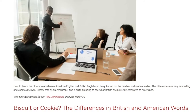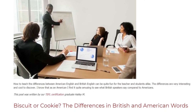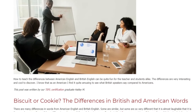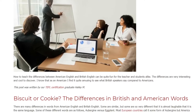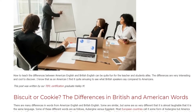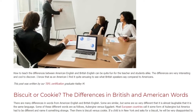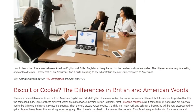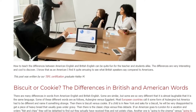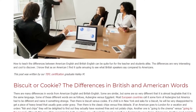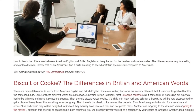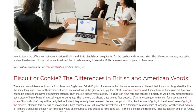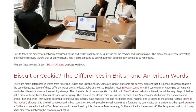Biscuit or cookie? There are many differences in words between American English and British English. Some are similar, but some are so very different that it is almost laughable that it is the same language. For example, aubergine vs. eggplant — most European countries call it some form of aubergine, but America had to be different and name it something strange.